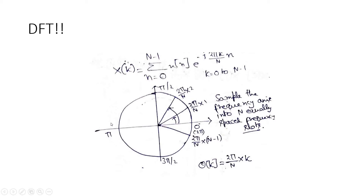The value π corresponds to the Nyquist frequency, which is the analog frequency equal to fs/2 (sampling frequency divided by 2). I have already discussed this in my previous video where I covered analog and digital frequency — please check the link in the description for a detailed explanation.